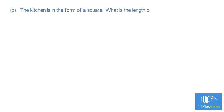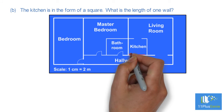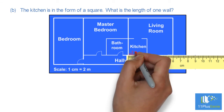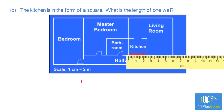Part B: The kitchen is in the form of a square. What is the length of one wall? The kitchen wall measures two and a half centimeters. One centimeter equals two meters, so two centimeters equals four meters, and half a centimeter equals one meter. Therefore, the length of the kitchen wall is four plus one, which equals five meters.